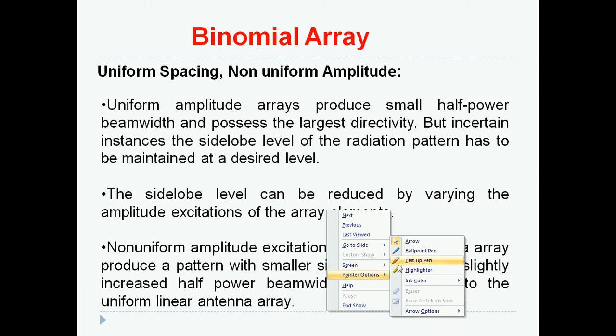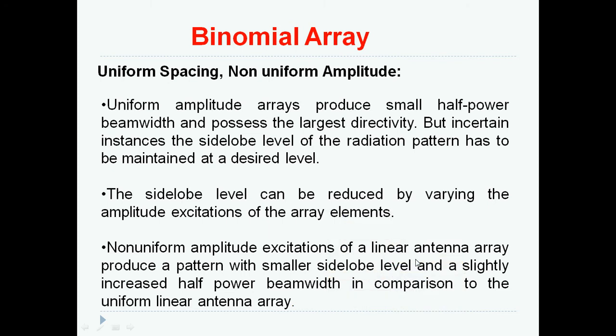the side lobe level of the radiation pattern has to be maintained at a desired level. The side lobe levels can be reduced by varying the amplitude excitation of the array elements. Non-uniform amplitude excitation of the linear array produce a pattern with smaller side lobe levels and slightly increased half-power beam width in comparison with linear arrays.